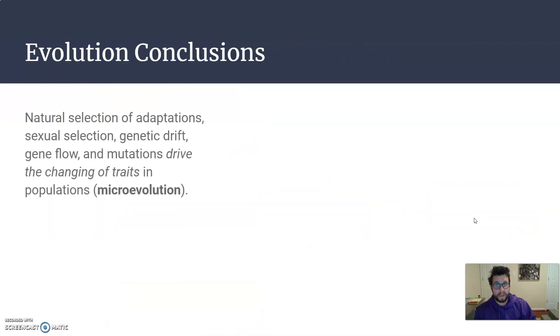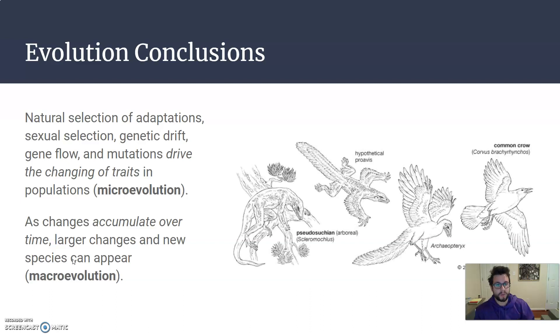So by combining all these things together, we can create small changes over time. And if enough changes accumulate, we can have large changes appear in the population. So this helps us recognize how things like the evolution of birds could happen, small changes over time, for whichever of these reasons build up to go from dinosaurs into birds.